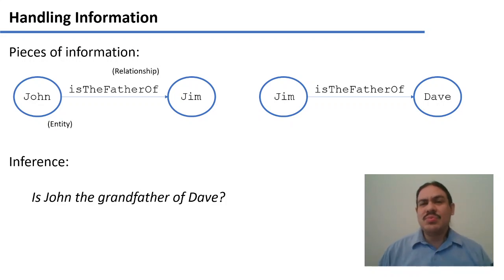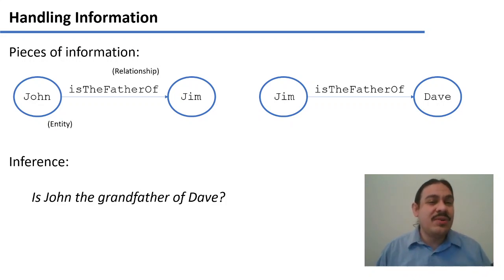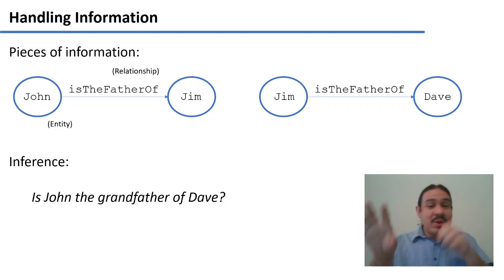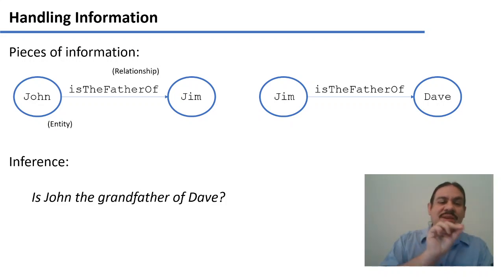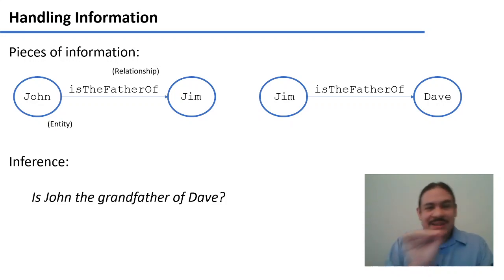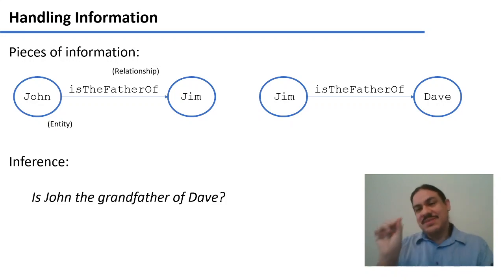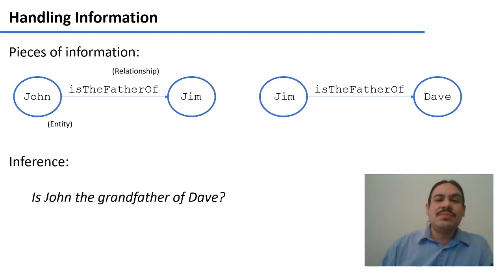However, we want the computer to do more than that. Hopefully, we want it to be able to answer questions like: is John the grandfather of Dave? Nowhere in this graph is there a relationship that contains this information. However, you could put together an answer based on the facts you have: that John is the father of Jim and Jim is the father of Dave — therefore John is the grandfather of Dave.